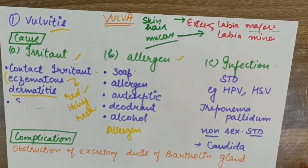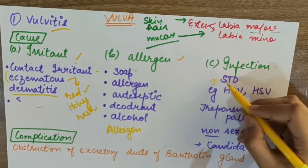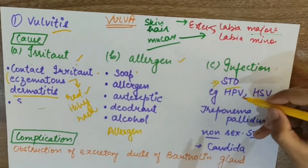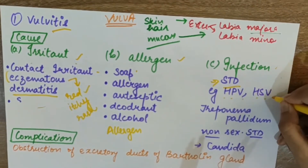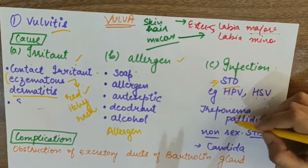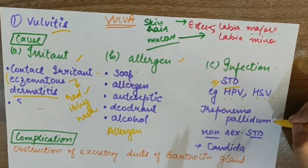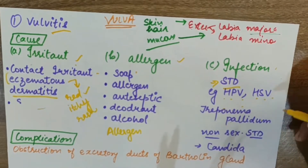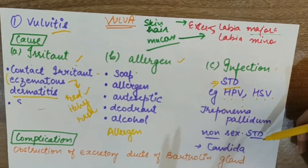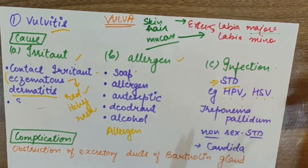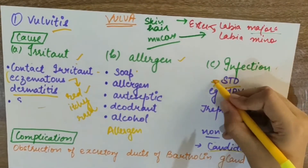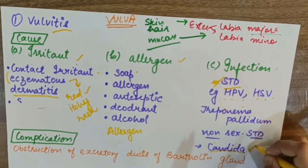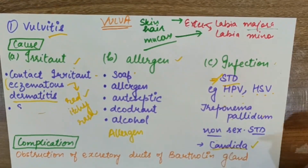Infection can be from sexually transmitted diseases. These include human papilloma virus (HPV), herpes simplex virus (HSV), and Treponema pallidum, which is the causative agent of syphilis. If we talk about non-sexually transmitted infection, that is Candida.